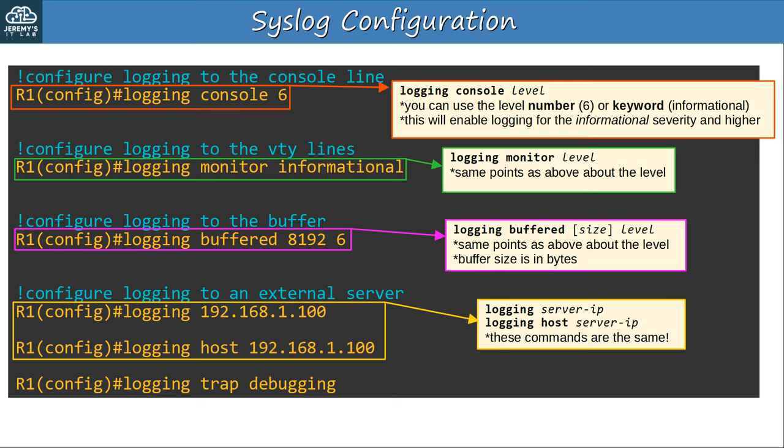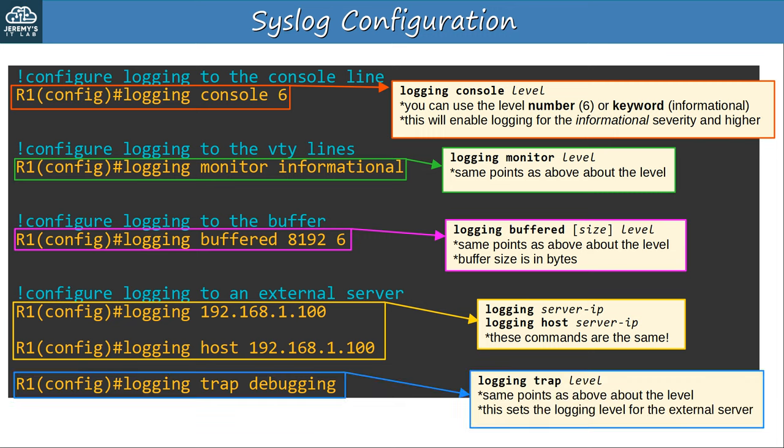Finally, logging to an external server can be configured with 'logging' followed by the server IP, or 'logging host' followed by the server IP — the commands are the same, you can use whichever. To configure the levels of messages sent to the external server, use a different command: 'logging trap' followed by the level. I specified 'debugging,' but I could have used the level number 7 instead. This enables logging of all levels — 7, 6, 5, 4, 3, 2, 1, and 0.